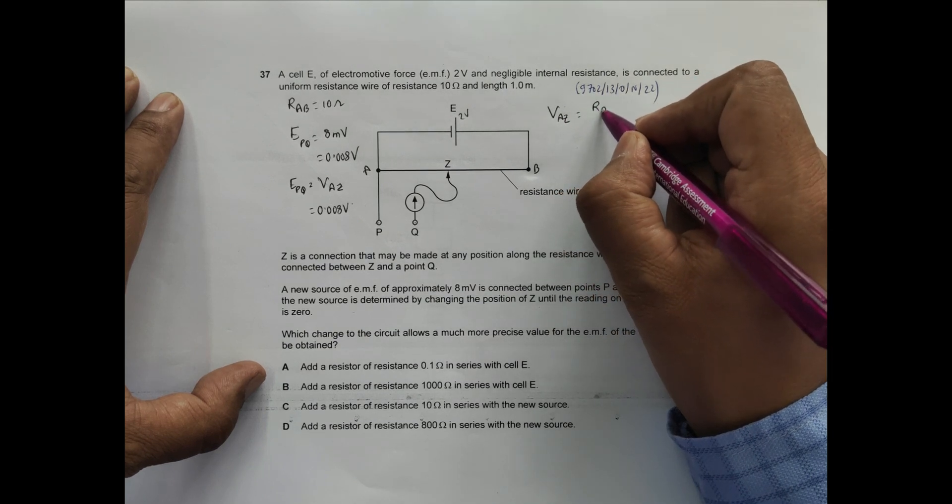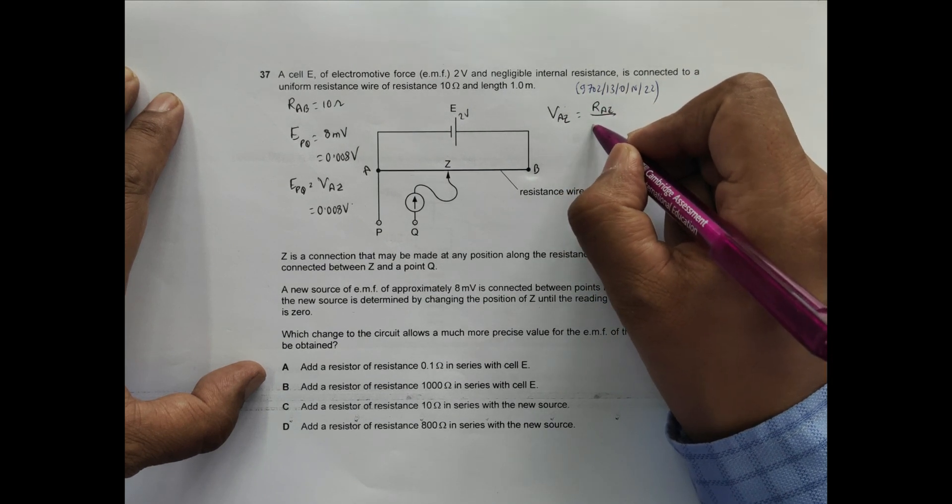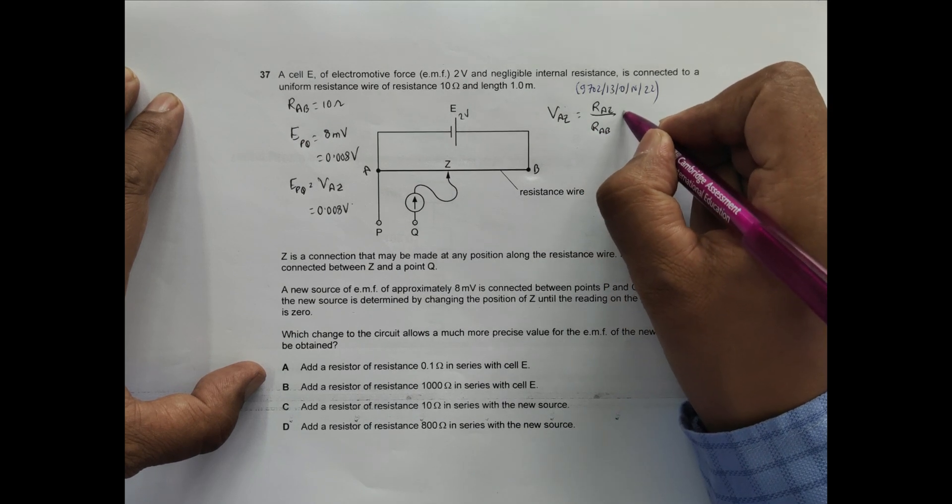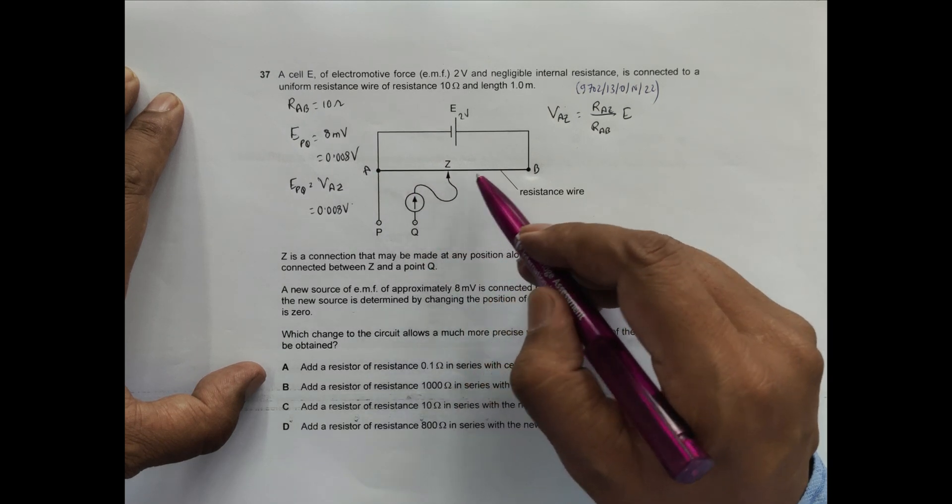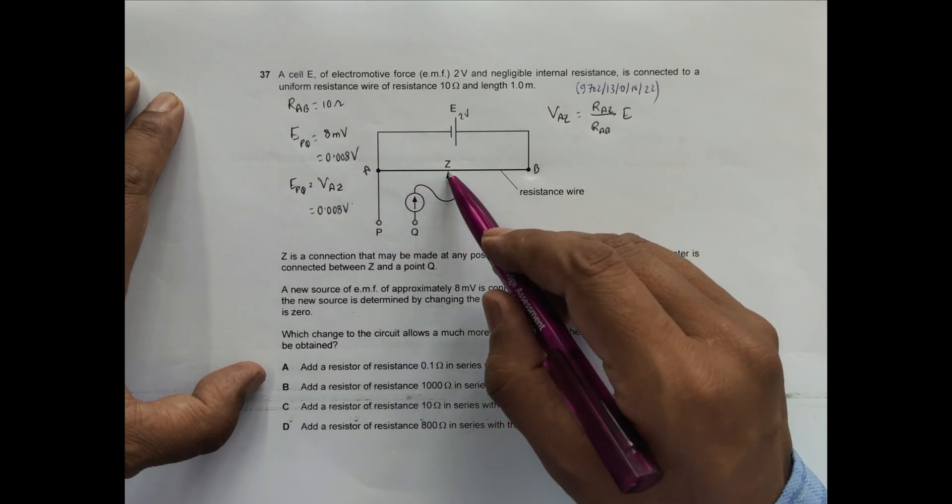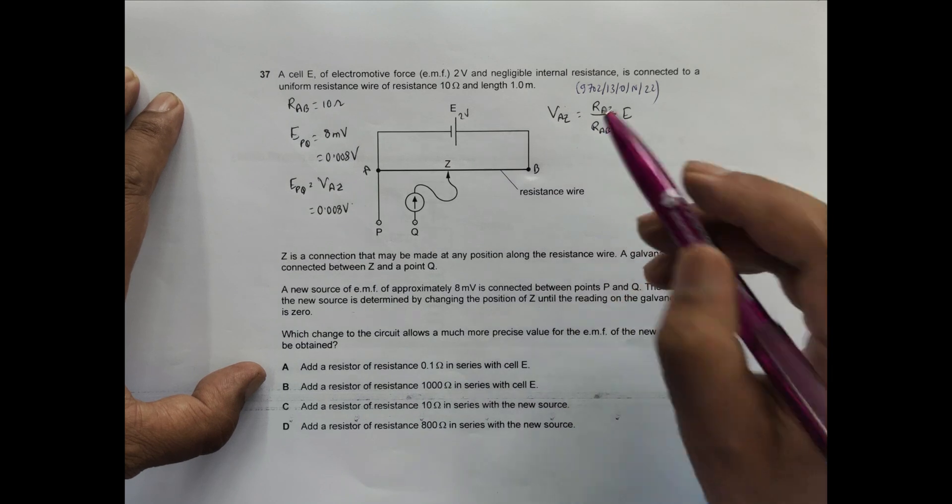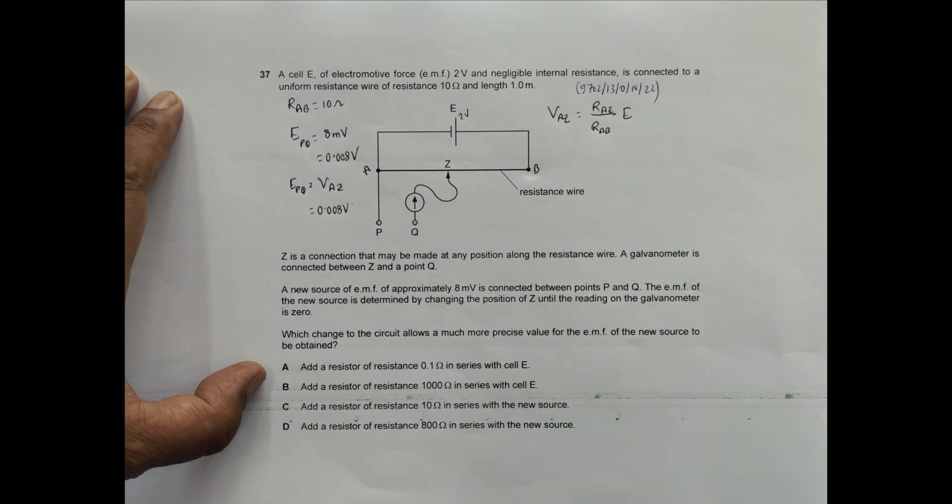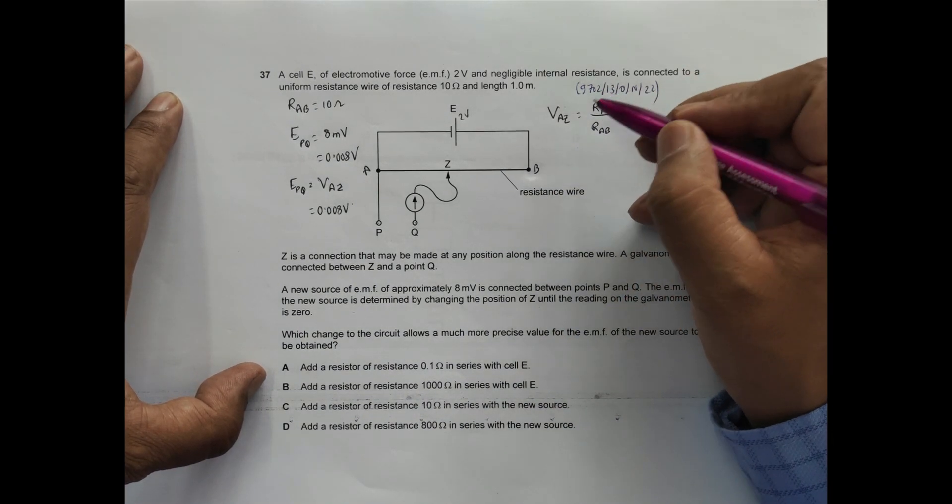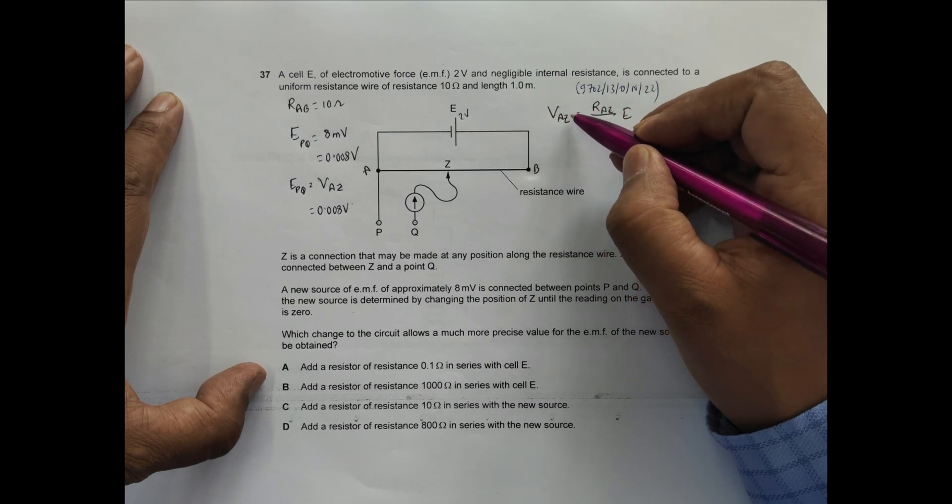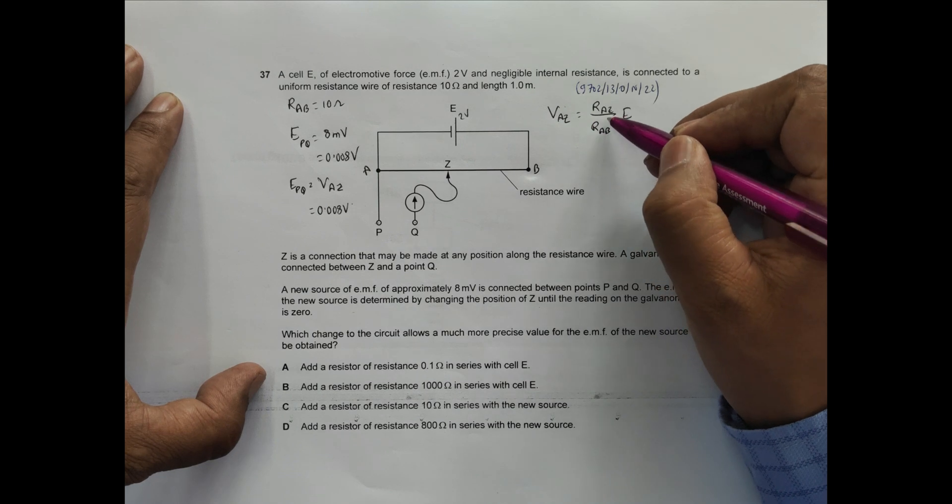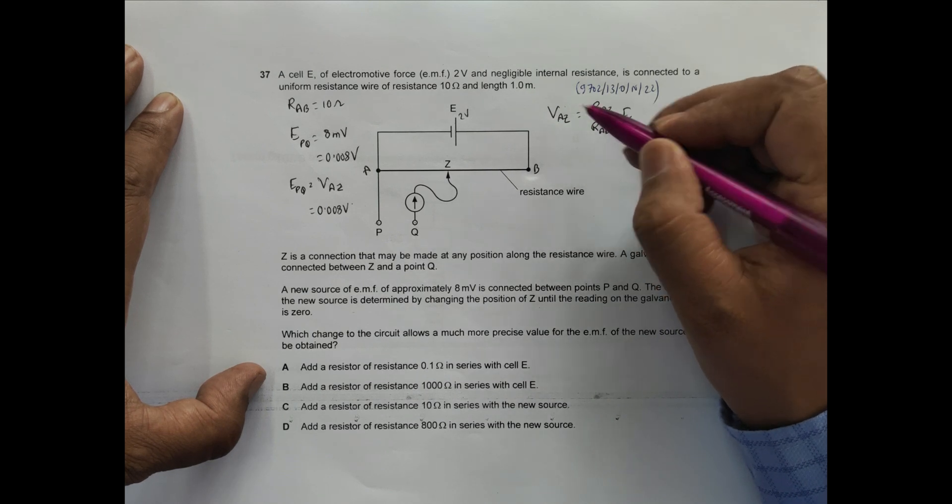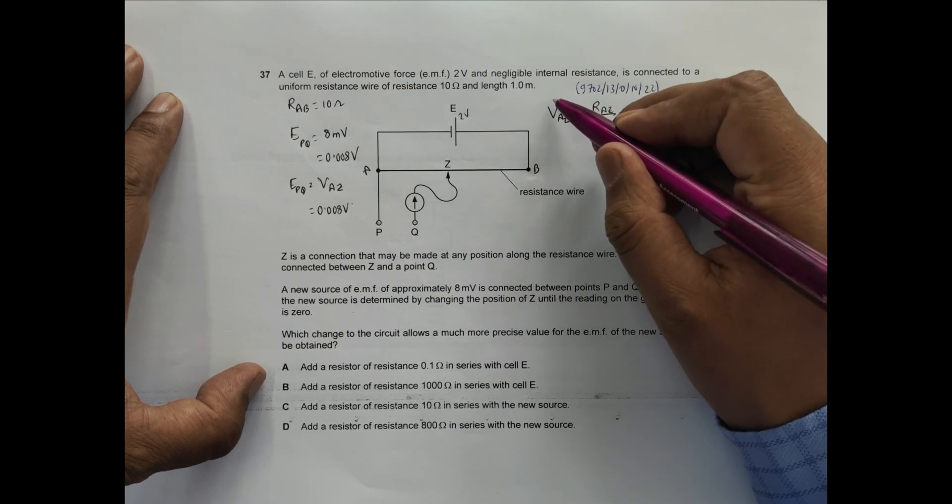RAZ divided by RAB times E - this is the voltage divider principle. VAZ equals RAZ divided by RAB times E. So if I want to obtain a more precise value of VAZ, I must increase the denominator to increase precision.